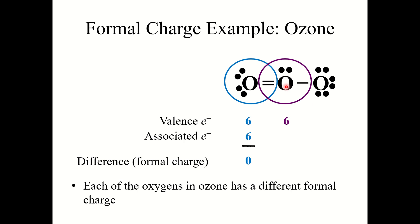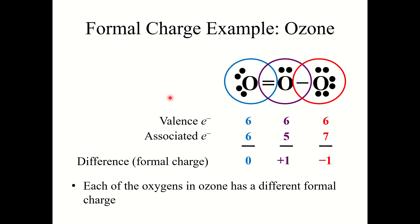For the middle oxygen, it again has six valence electrons. Counting associated electrons: two from the lone pair and three from the bonds gives five associated electrons, so a formal charge of plus one. The last oxygen atom has six valence electrons and seven associated electrons, giving a formal charge of minus one. So the three formal charges are zero, plus one, and minus one. Note that formal charges should sum to the overall charge of the molecule — ozone is neutral, and zero plus one plus negative one equals zero.